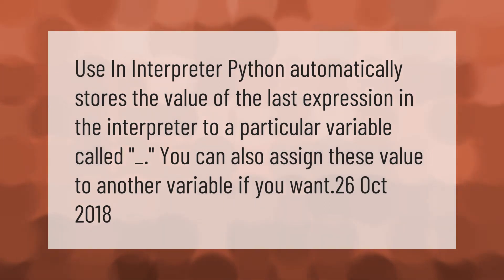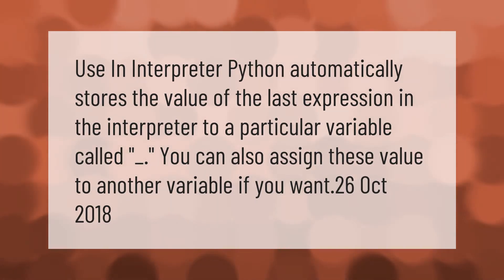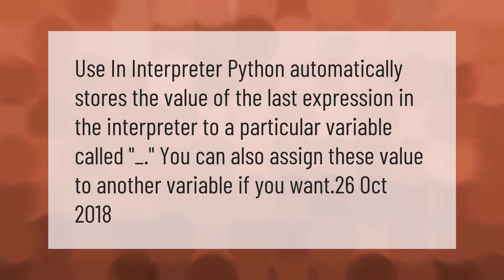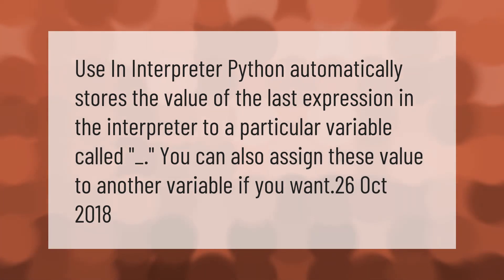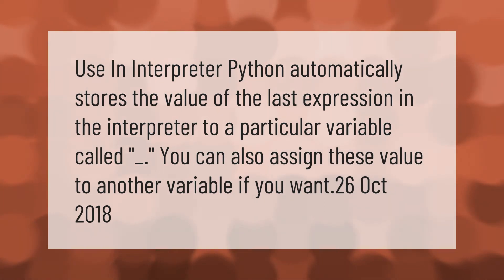In the Python interpreter, Python automatically stores the value of the last expression to a particular variable called underscore (_). You can also assign this value to another variable if you want.